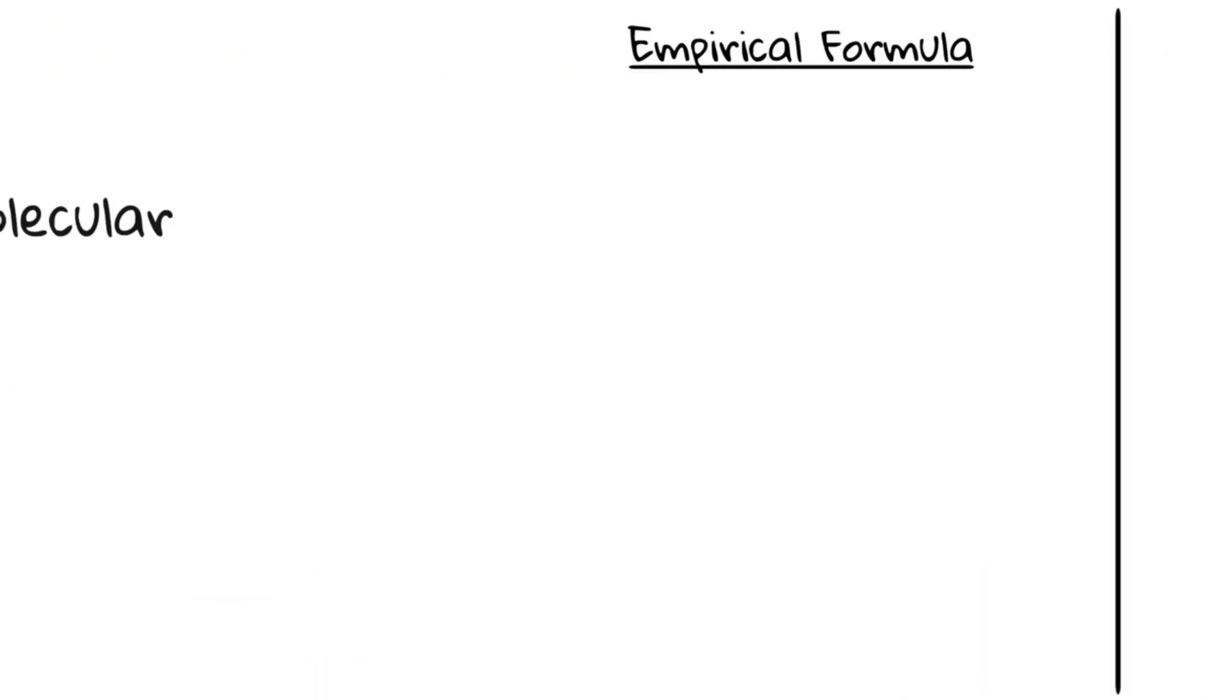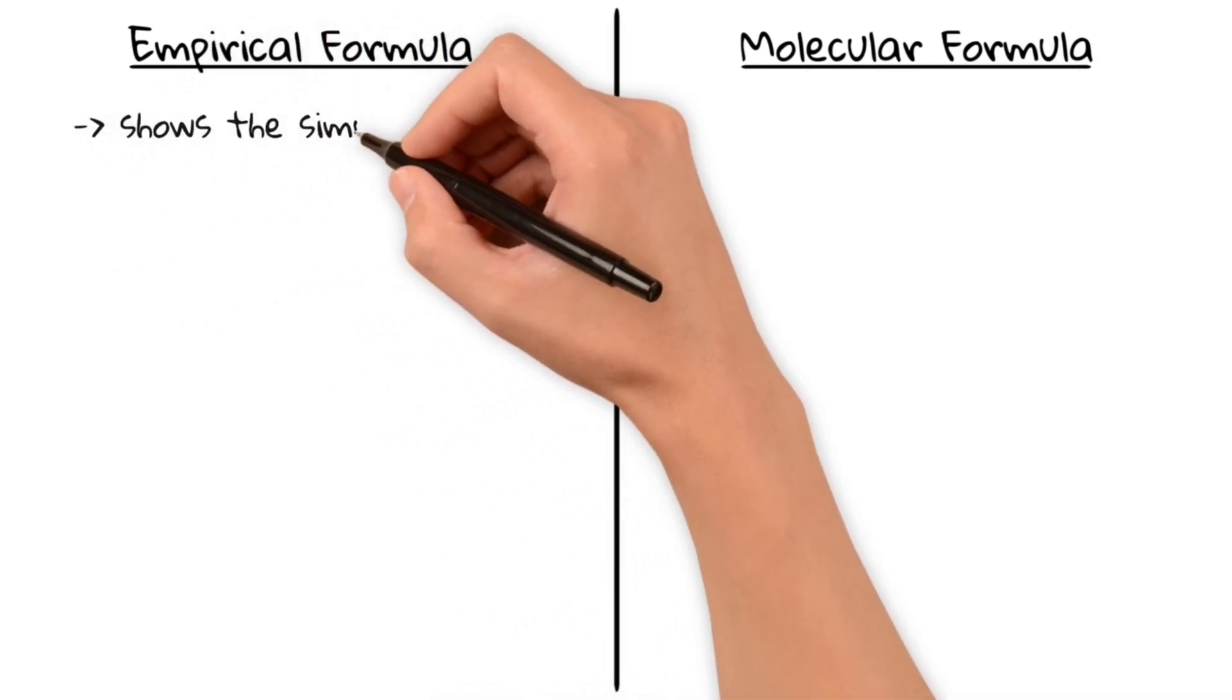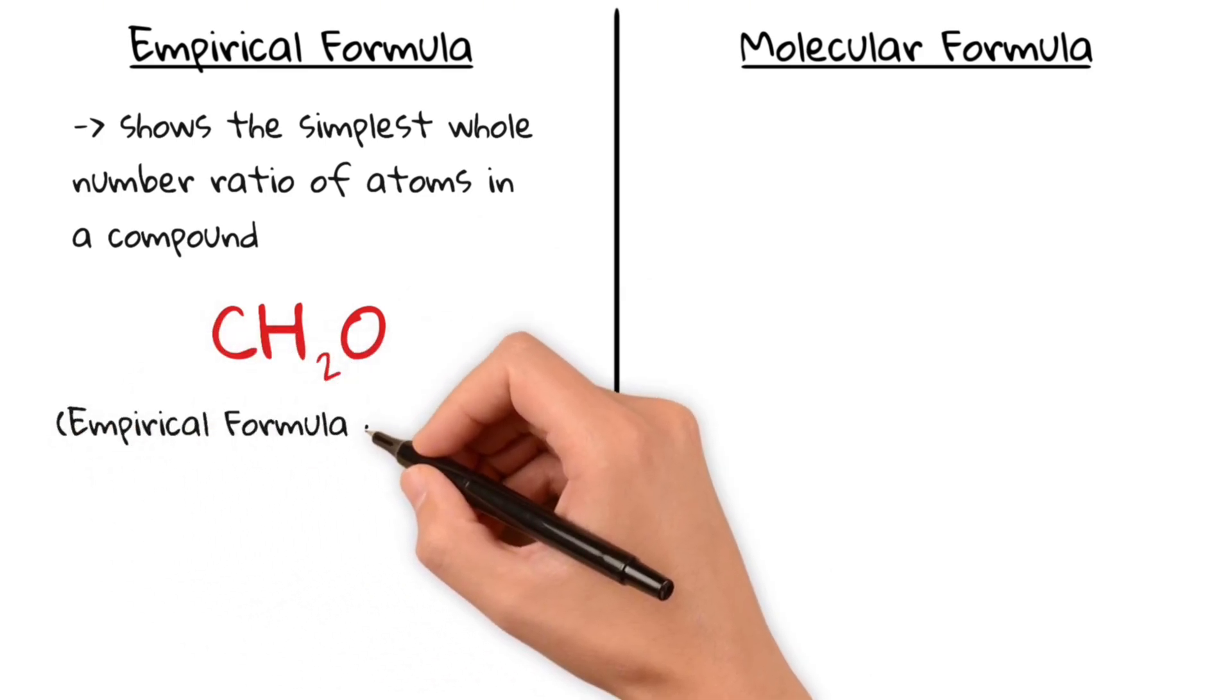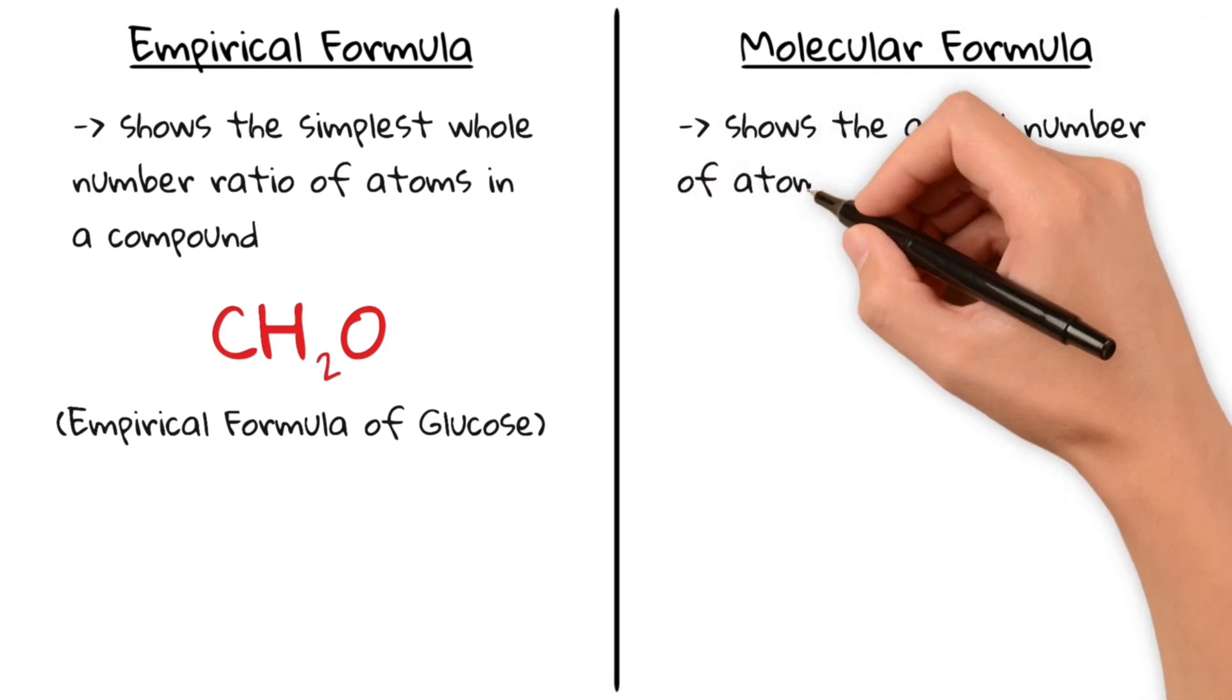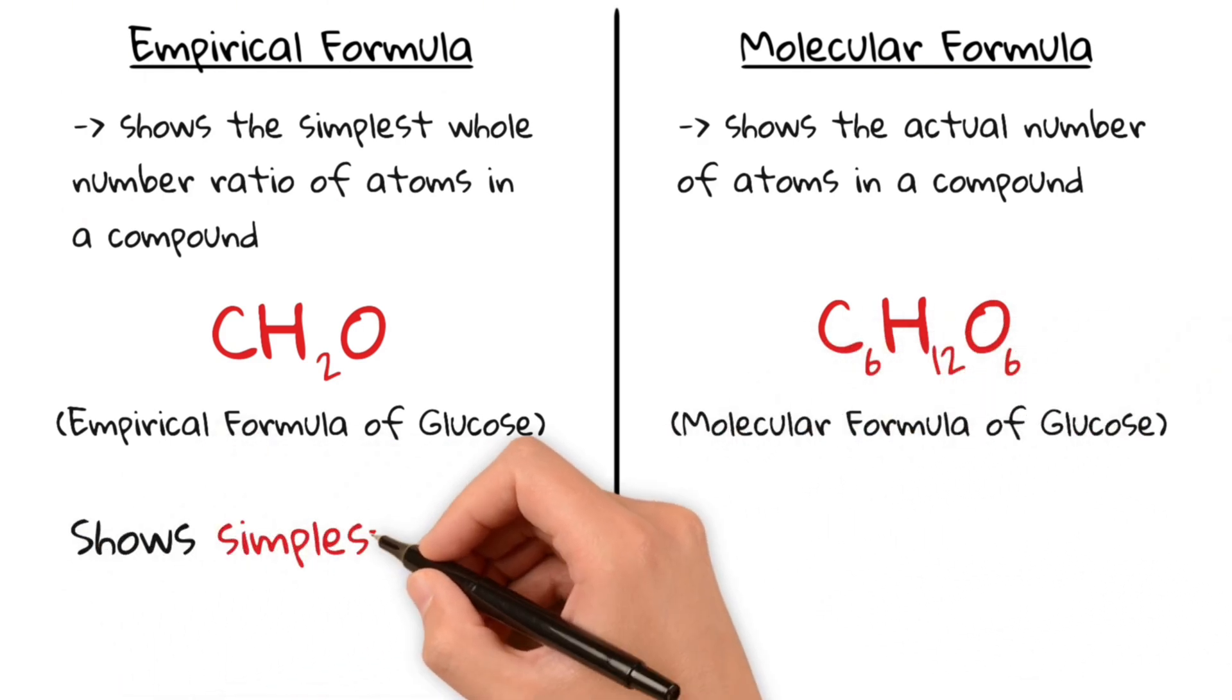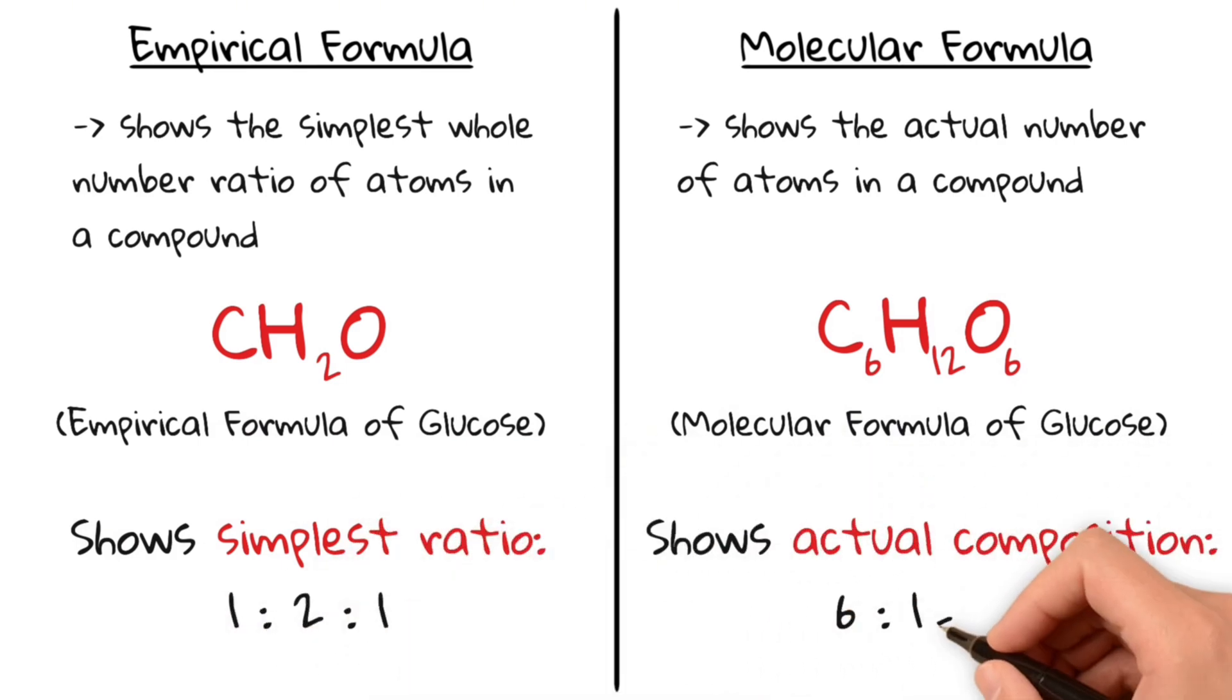First up, what's the difference between empirical and molecular formulas? An empirical formula shows the simplest whole number ratio of atoms in a compound, example CH2O for glucose. A molecular formula shows the actual number of each type of atom in a molecule, example C6H12O6 for glucose. You can think of the empirical formula as the simplest version of a molecular formula, which in turn is the actual formula of a compound.